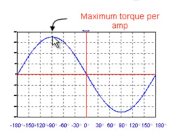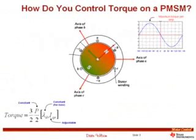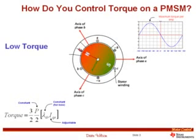The torque produced by a permanent magnet three-phase machine is a function of the angle between rotor flux and the stator current MMF. At zero degrees — when the current MMF vector is aligned with the rotor flux — there is essentially zero torque. At plus or minus 90 degrees we get maximum torque per amp. So in most cases we should orient our stator current MMF vector to be at 90 degrees with respect to the rotor flux. The torque equation then shows torque is proportional to rotor flux times the component of stator current at 90 degrees to that flux.